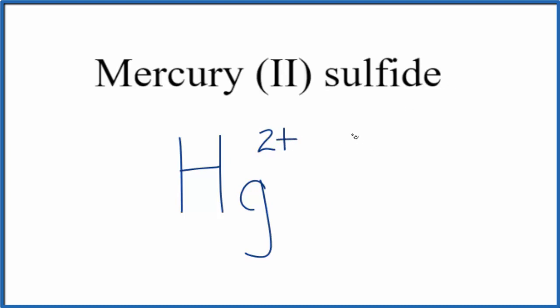For the sulfide, that means we have sulfur. And sulfur on the periodic table is in group 16, sometimes called 6A.